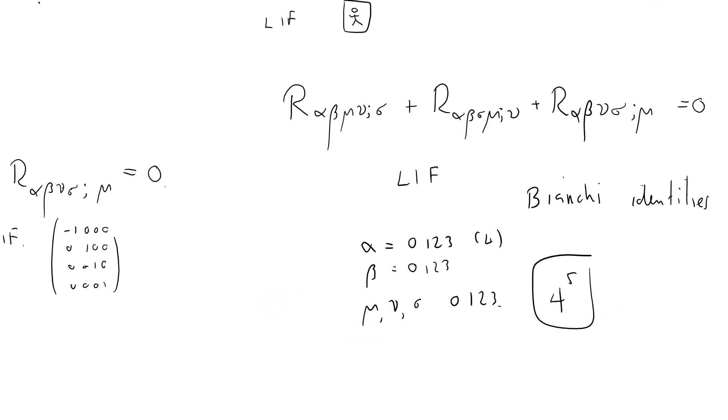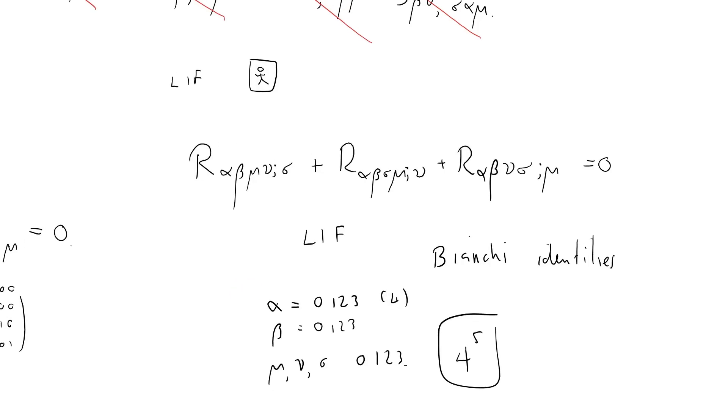Even so, the Bianchi identities are very, very useful. And what we're going to do now is to try and use them for Einstein. This is why they're important. They give us a key piece of information to put the Einstein field equations together. Okay, I'm going to stop there. Those are the Bianchi identities.